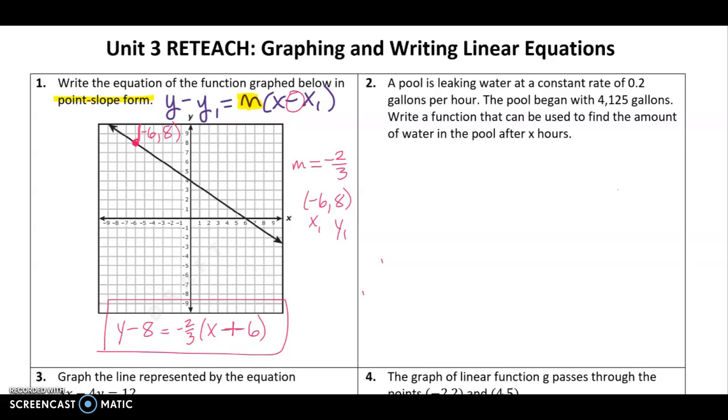We have a rate. A pool is leaking. First of all, leaking tells us that we're going to have a negative slope. And rate also tells us that that is the slope. So for us, our slope is negative 0.2. I think on the test, a lot of us forgot the negative, because it is leaking. If you see something leaking, that means that it should be a negative slope. The next piece is that the pool began with this many gallons. Whatever your starting amount is, that is your y-intercept, your b. And it's a positive 4,125 gallons.